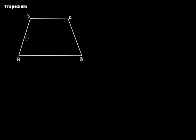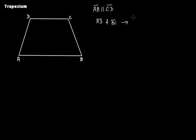In this figure we have a quadrilateral ABCD, and AB is parallel to CD — we write it as AB is parallel to CD. AD and BC are non-parallel sides. This pair of sides, AD and BC, are non-parallel sides.